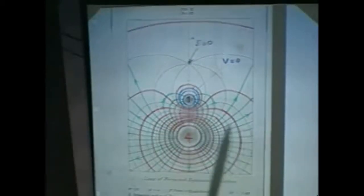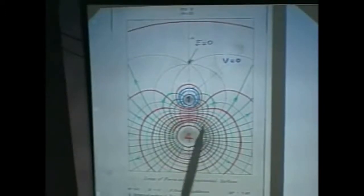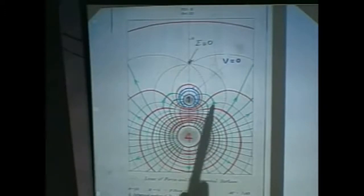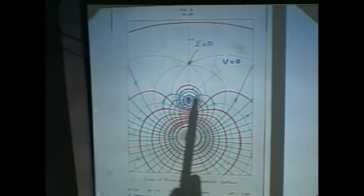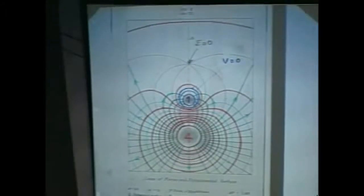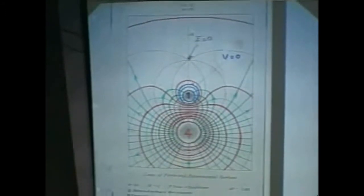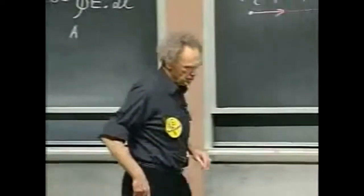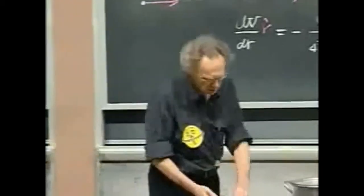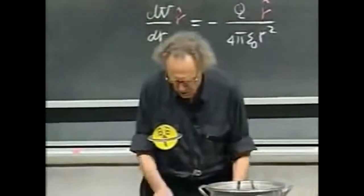Notice, if I take this field line, it is perpendicular here to the red surface, perpendicular there, perpendicular there — and coming in here, perpendicular, perpendicular, perpendicular. Everywhere when you look on this graph, you will see that the field lines are perpendicular to the equipotentials. And that is something that we now fully understand.